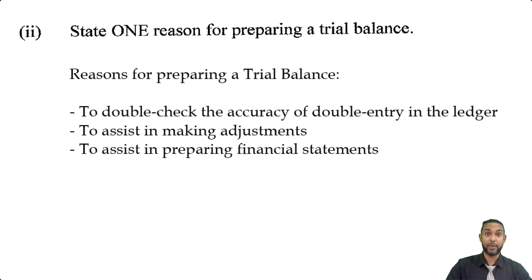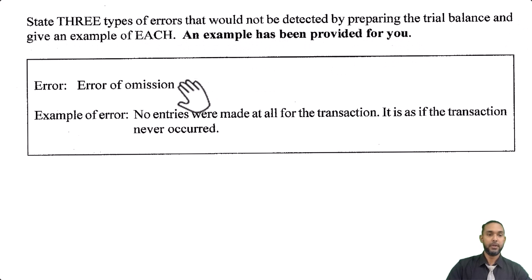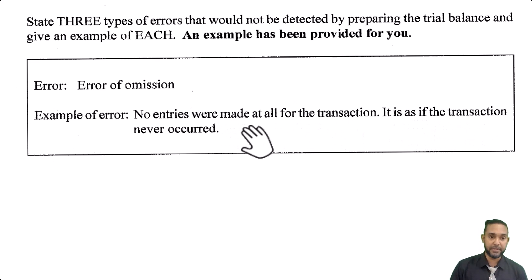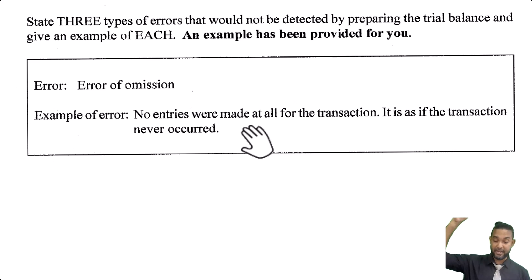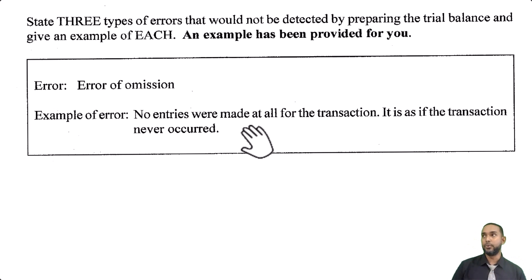Now Part B: state three types of errors that would not be detected by preparing the trial balance and give an example of each. An example has already been provided — error of omission, where no entries were made at all for the transaction, as if the transaction never occurred. There are actually seven such errors. I'm going to put a link to the errors playlist in the description if you need to sharpen up your error skills.